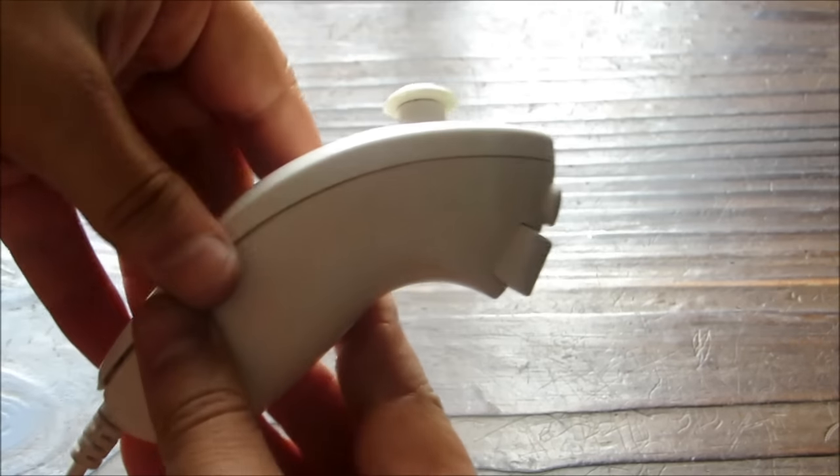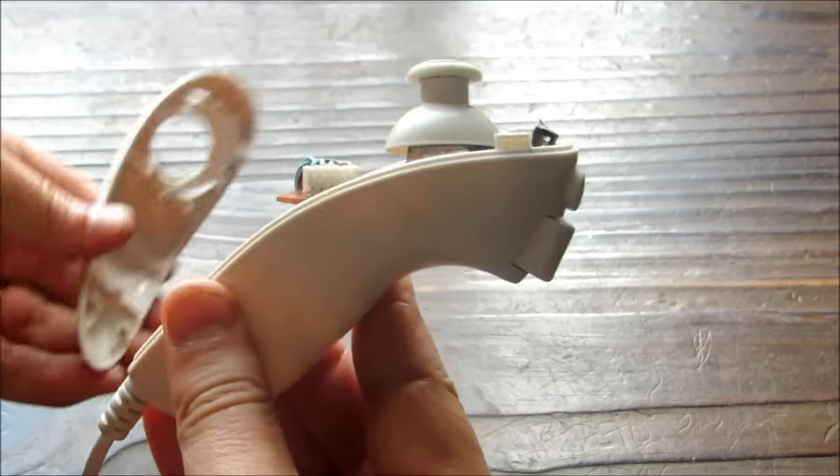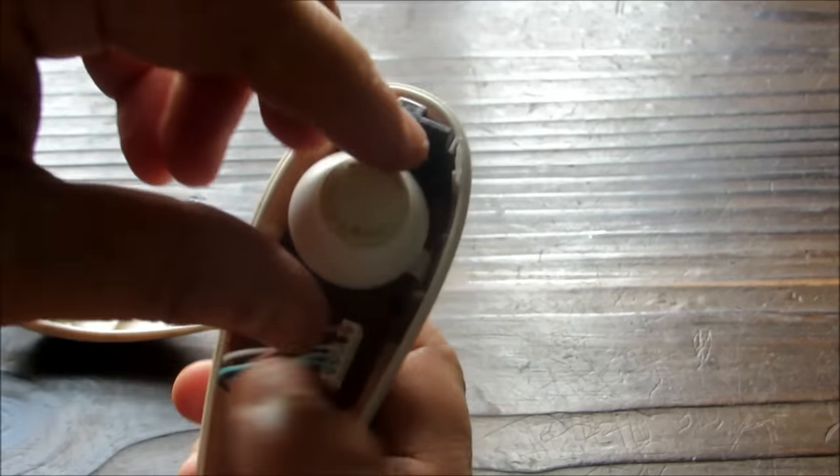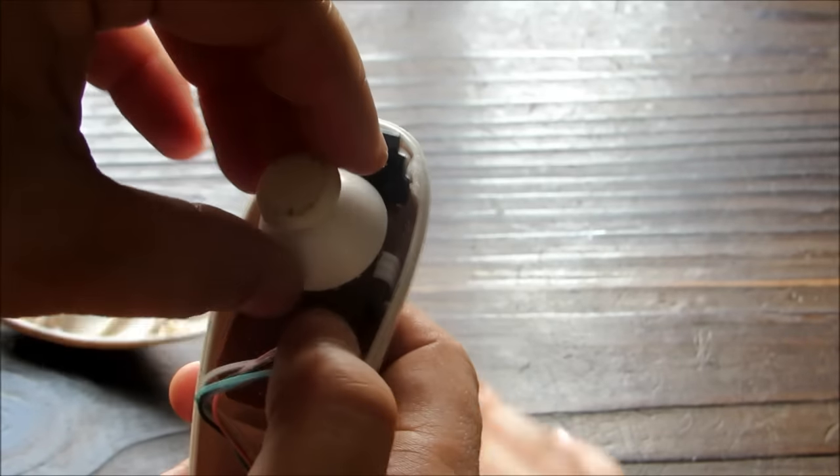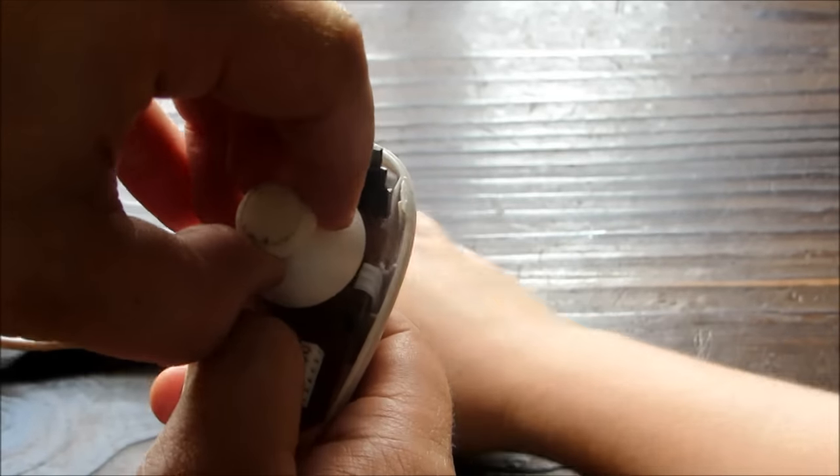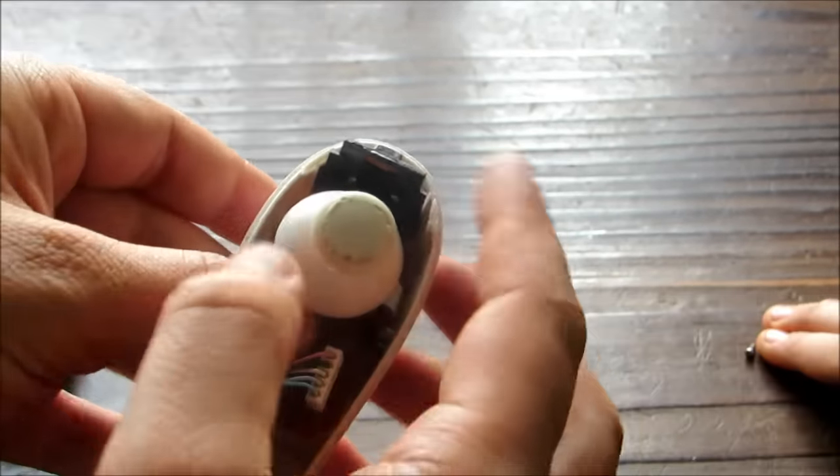Next step is to remove the cover and remove the plastic cover of the stick. Be careful with that because the electronic part should not be removed. As you can see here, the diameter of the stick was reduced because of the friction while playing.